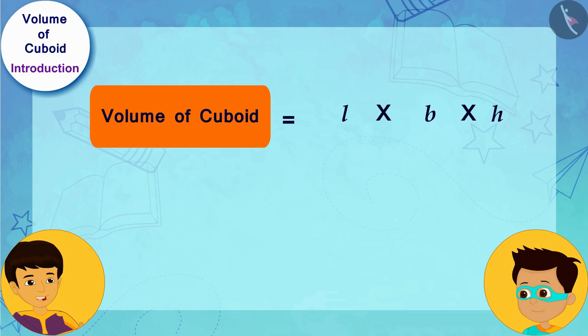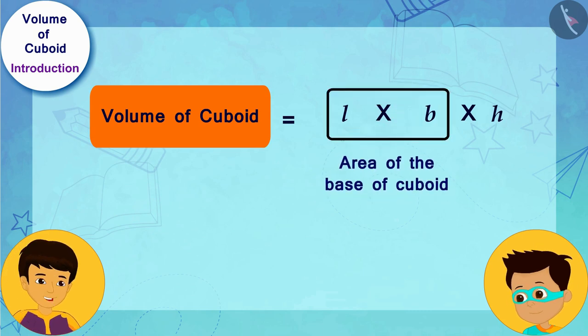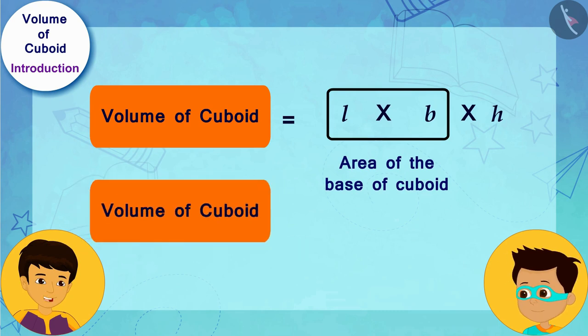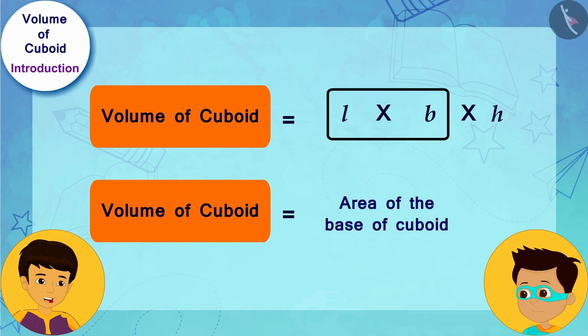Exactly, Thomas! And because L times B is the area of the base of the cuboid, we can also write the formula for the volume of a cuboid as the area of its base into its height.